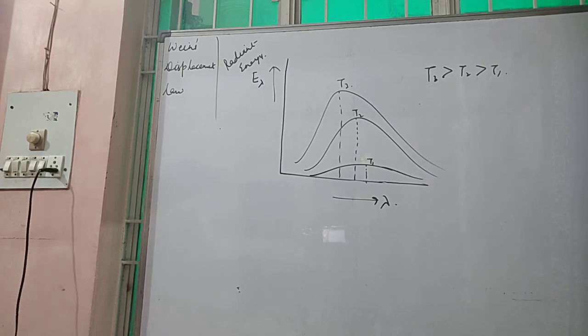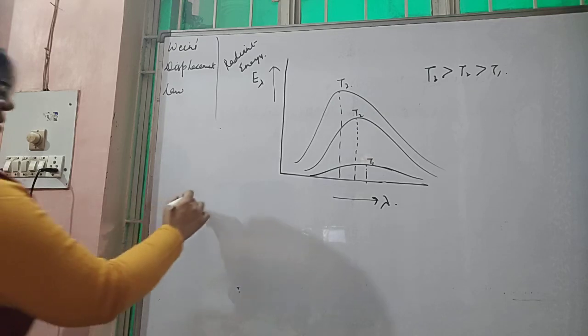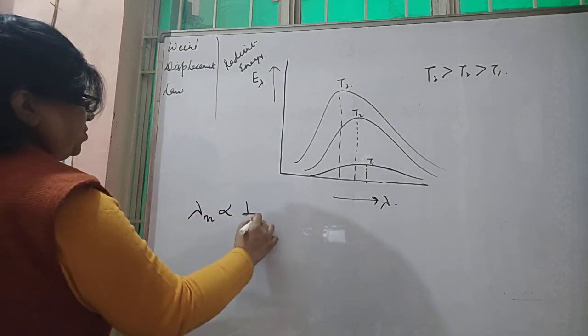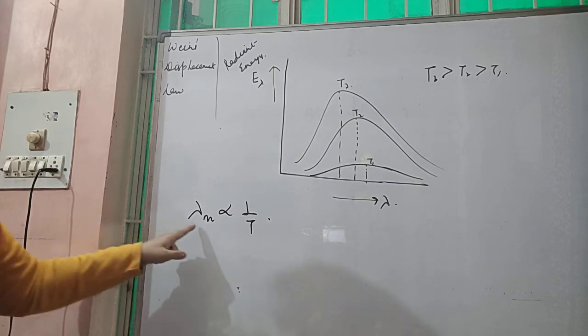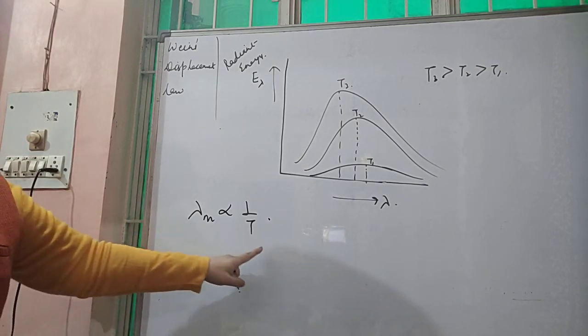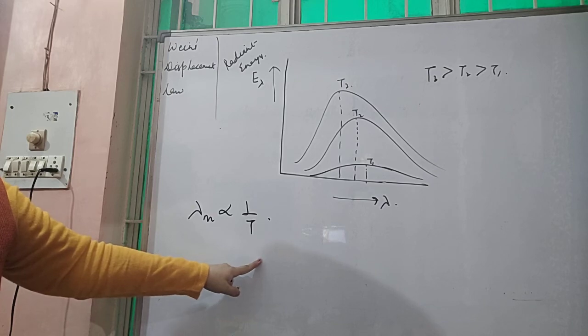And this is what our relationship lambda inversely proportional to T is showing. So the maximum wavelength will have the smallest temperature.